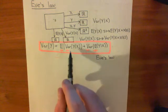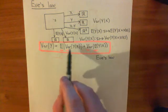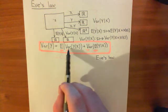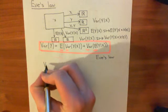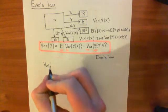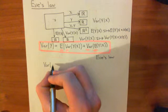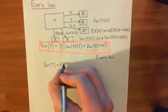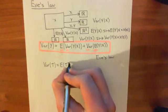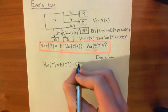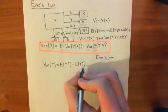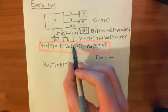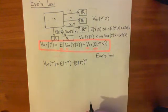The easiest way to see it's true is to plug in what these variances are. Remember that the variance of a random variable t is equal to the expected value of t squared minus the expected value of t, all of that squared. And that holds true of random variables which are conditional random variables. So let's plug those in and take the right-hand side and substitute in the values of the variances.